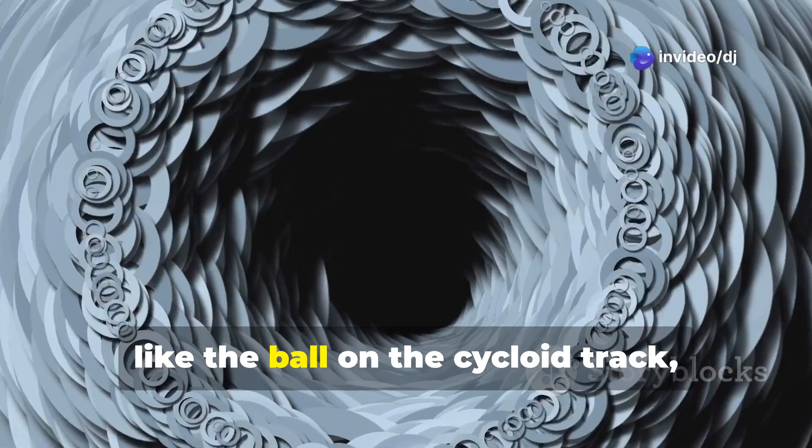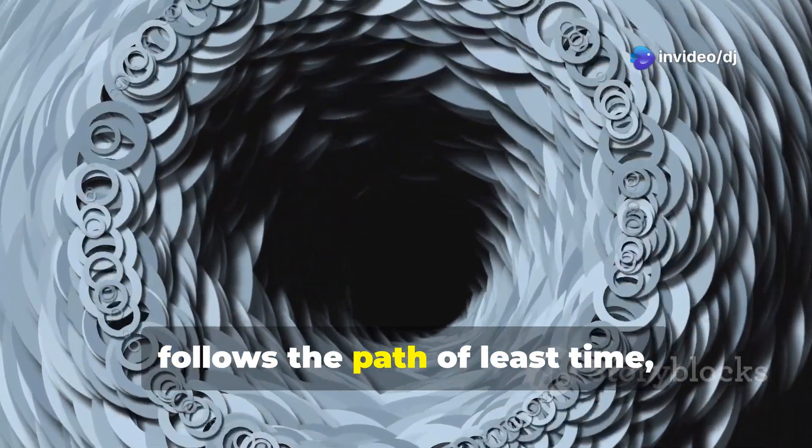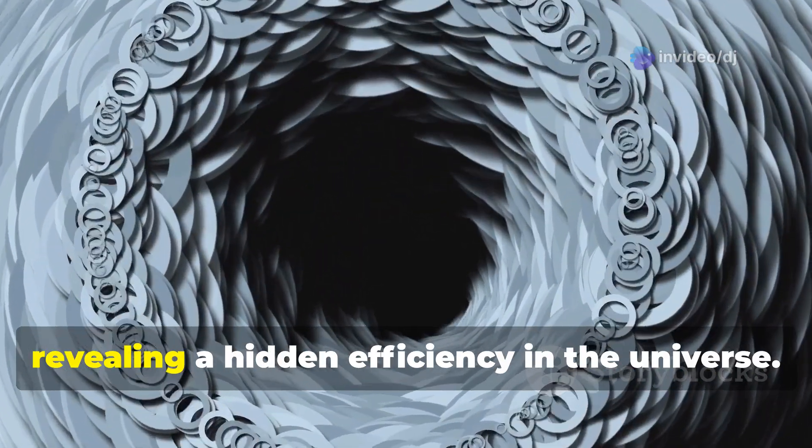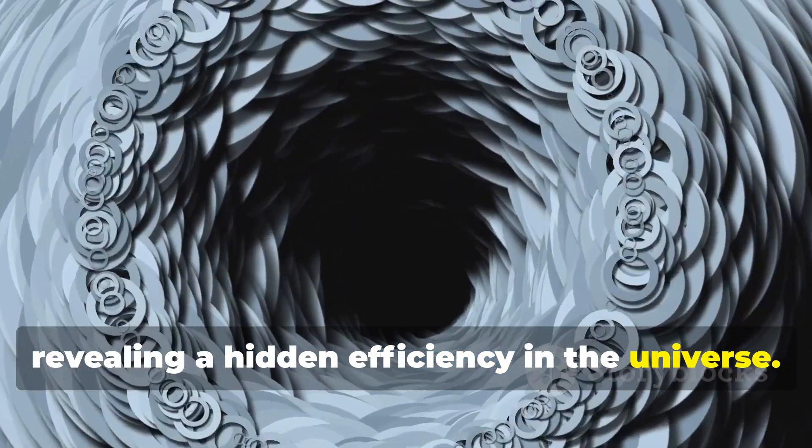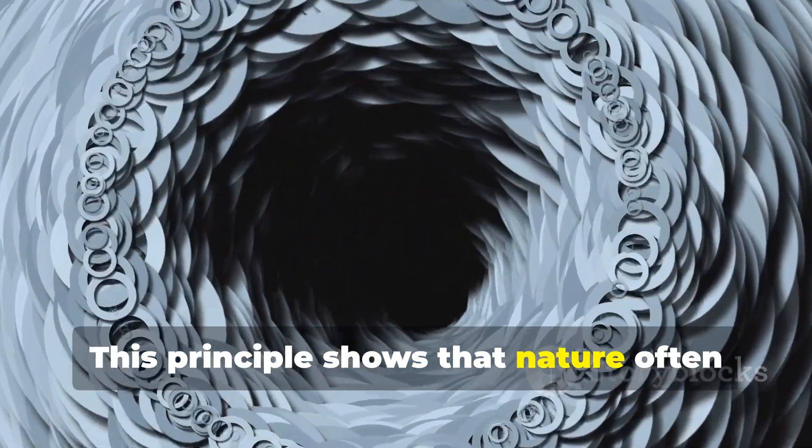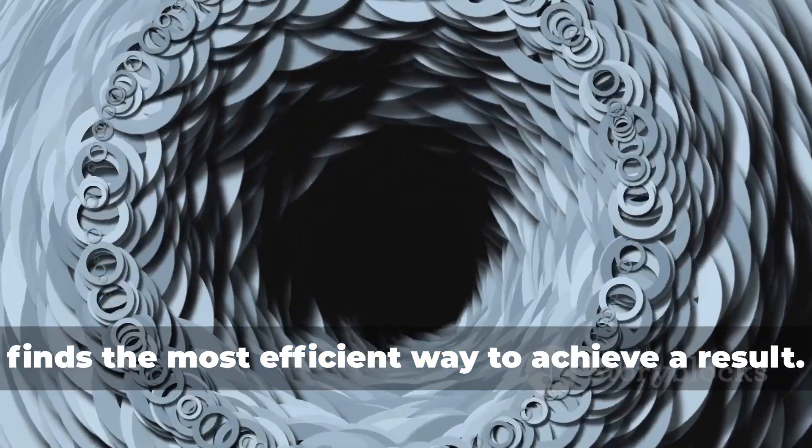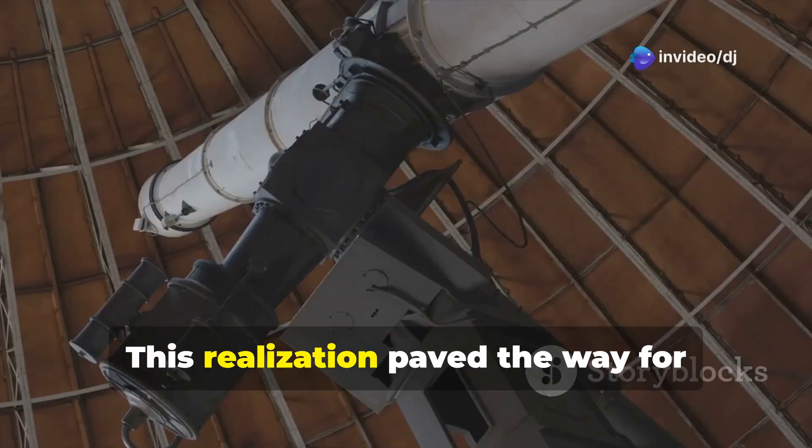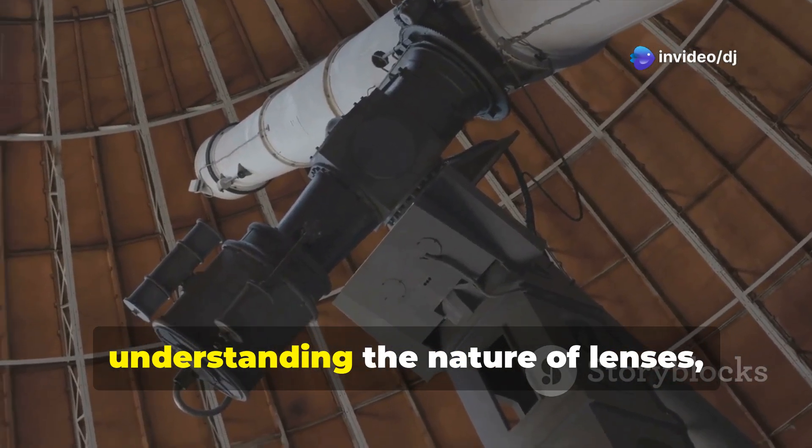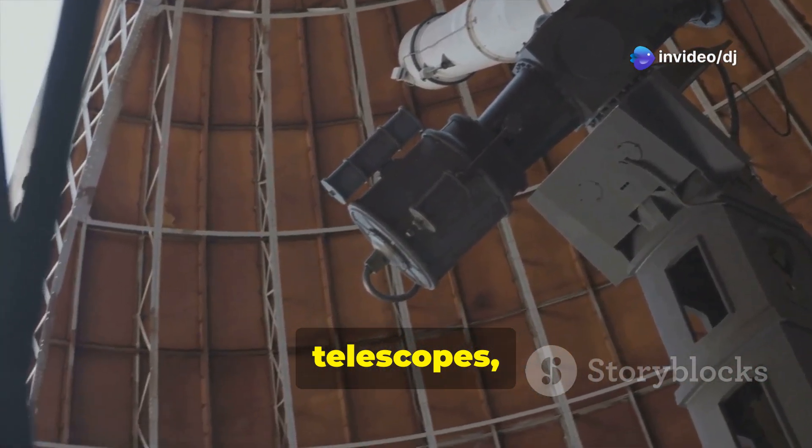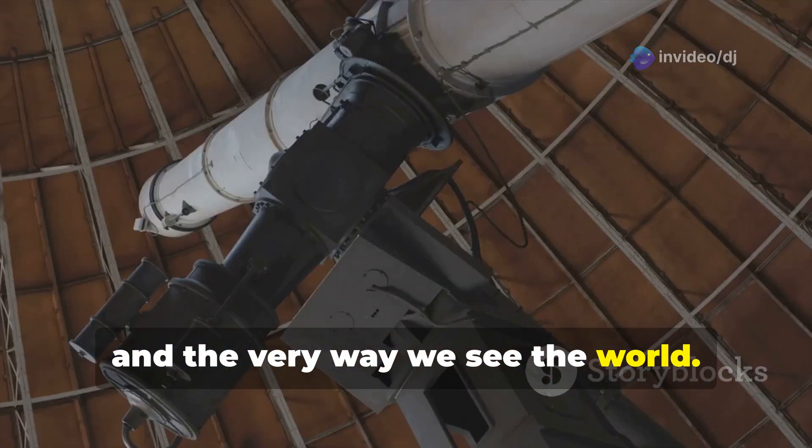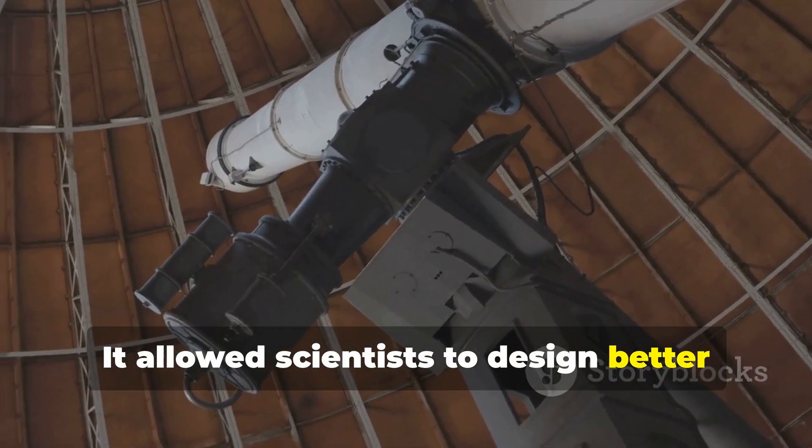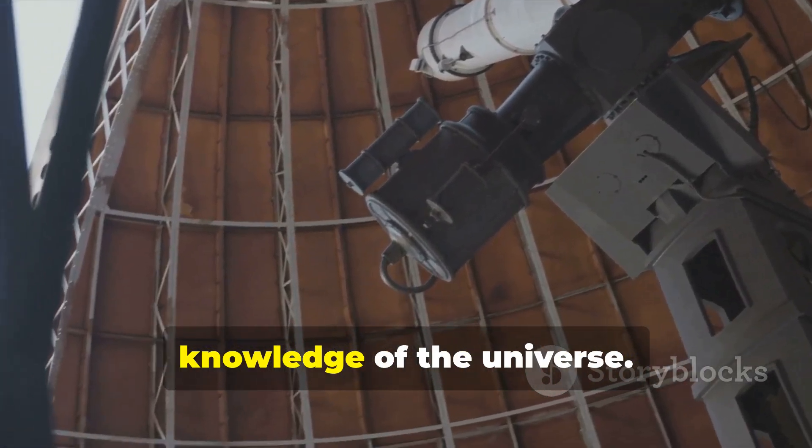Light, like the ball on the cycloid track, follows the path of least time, revealing a hidden efficiency in the universe. This principle shows that nature often finds the most efficient way to achieve a result. This realization paved the way for understanding the nature of lenses, telescopes, and the very way we see the world. It allowed scientists to design better optical instruments and deepen our knowledge of the universe.